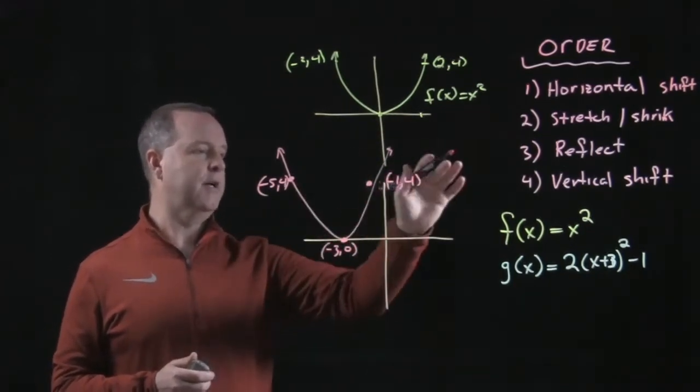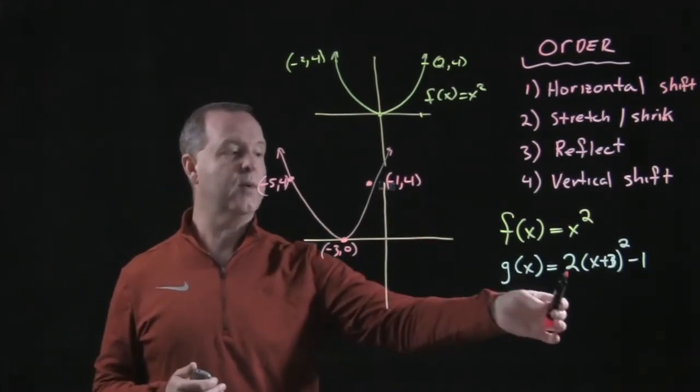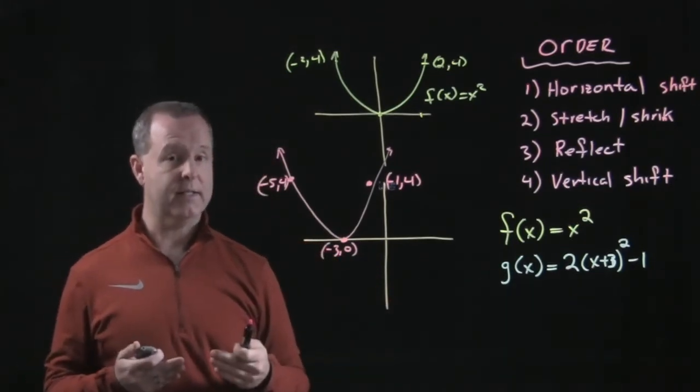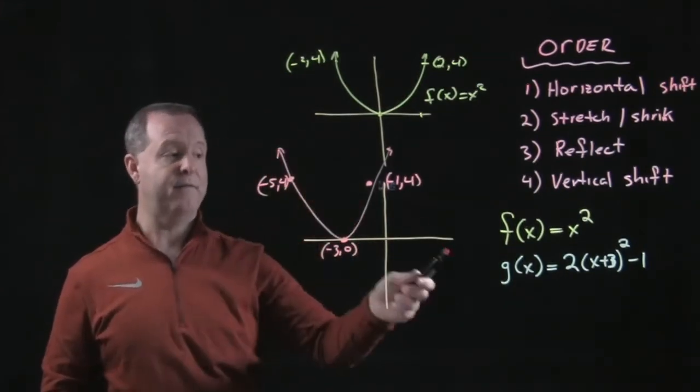All right, we did the horizontal shift. Now, do we have a stretch or a shrinking factor going on? We do. We see this multiplier. It's a two. The two tells us that it's going to grow or it's going to be stretched by a factor of two.